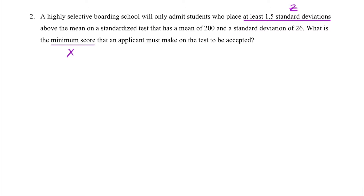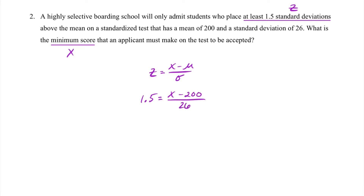We are using the z formula again, so we've got z equal to x minus mu, all over sigma. They told us that the school will only admit students who place at least 1.5 standard deviations above the mean, so z is 1.5. x is what we're looking for. The mean score was 200 and the standard deviation was 26. Substituting into our formula, we want to solve for x.